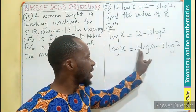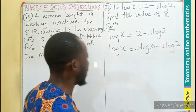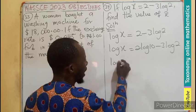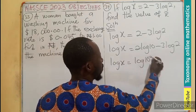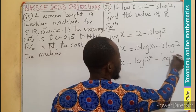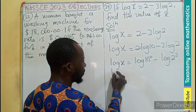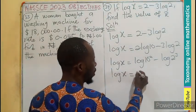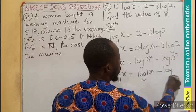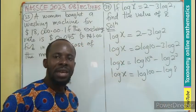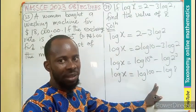The third law says that when a number multiplies a log, it becomes an exponent. So this becomes log x = log 10² - log 2³. I believe we can have logarithm of x = log 100 - log 8. And the second law of division says that if I am subtracting a logarithm,